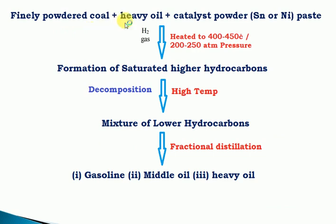Finally, in summary: powdered coal with a catalyst is mixed based on proportion. Hydrogen gas passes into a converter at 400 to 450 degrees centigrade and 200 atmospheric pressure. Solid coal forms saturated higher hydrocarbons, which decompose into lower hydrocarbons. These pass through a fractional distillation column and separate in liquid state into heavy oil, middle oil, and gasoline. In this method, primary fuels are converted to secondary fuels — natural fuels converted to synthetic petrol.